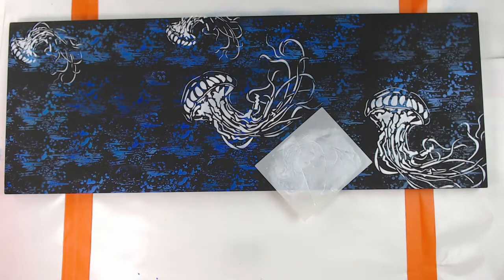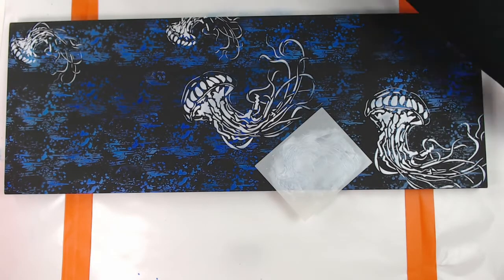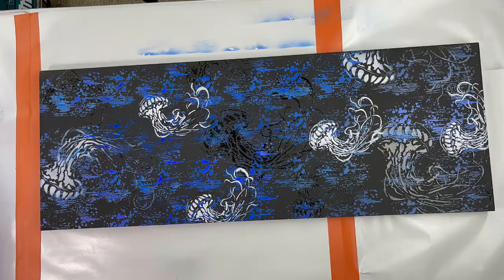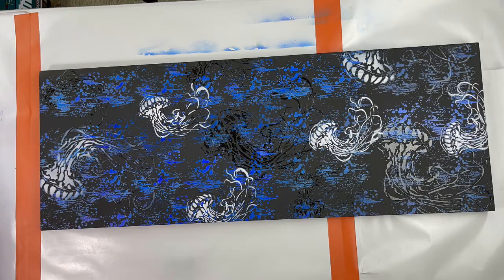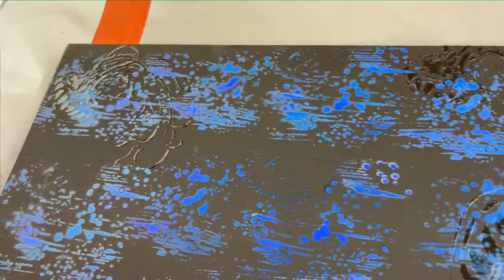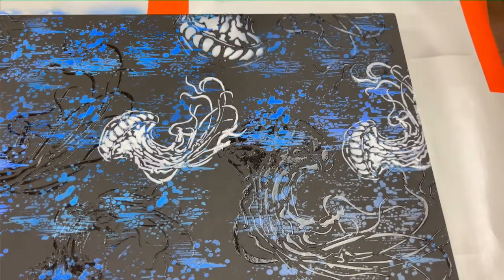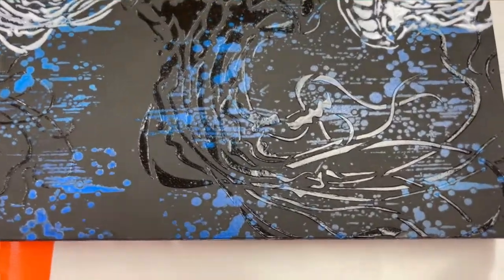I do both sides of the stencils so I can get different movement and make a smack of jellyfish - that is the term for a bunch of jellyfish. You can see it's clear and I wanted it raised. It gives a little bit of lift to give it dimension from the abstract water background.